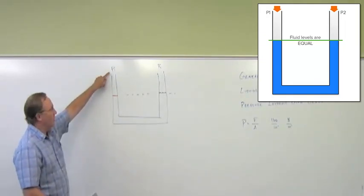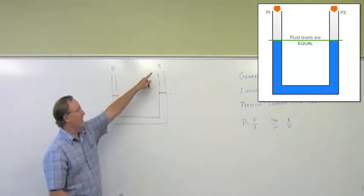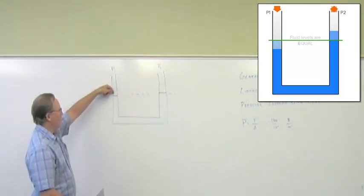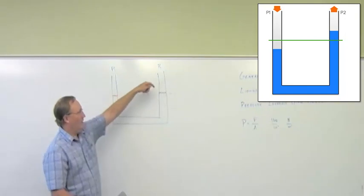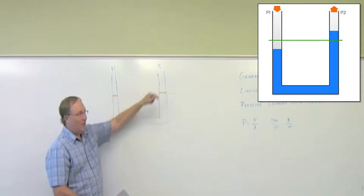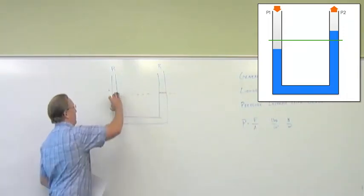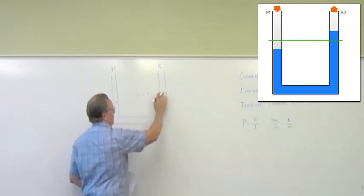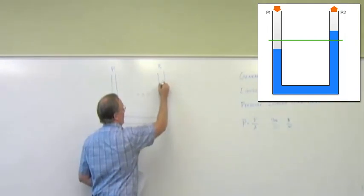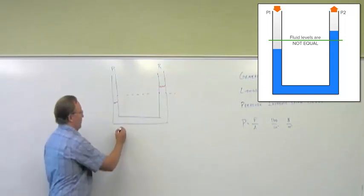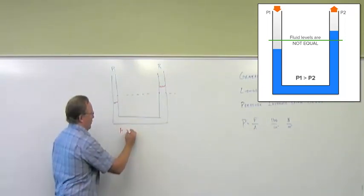So, if this pressure increases to be greater than this pressure, we know intuitively what's going to happen. This pressure is going to push down on the top of the liquid more than the force of this pressure pushing down on top of this liquid. So, what's going to happen is, the level of this liquid is going to drop, and the level of this liquid is going to rise. This is for P1 greater than P2.